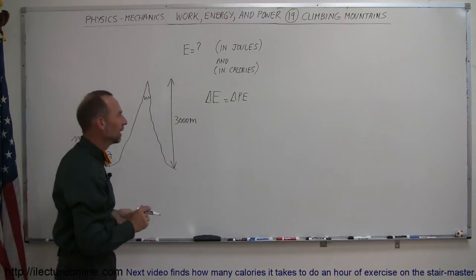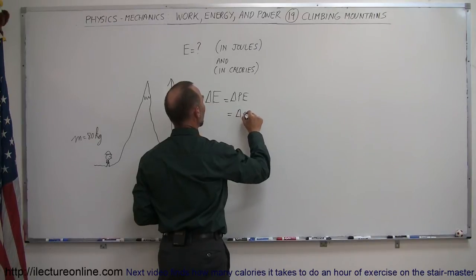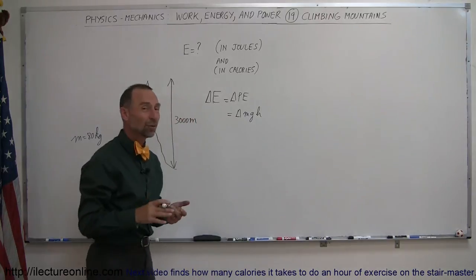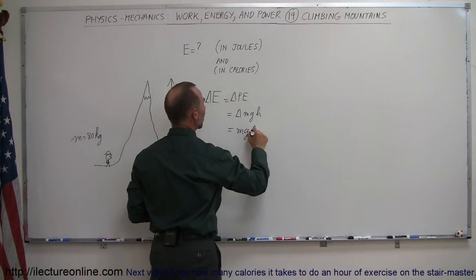So that's a change in potential energy. And potential energy, by definition, is Mgh, so that's equal to Mgh, the change in that. And of course, M and G will be constant, so this is equal to Mg times the change in the height.